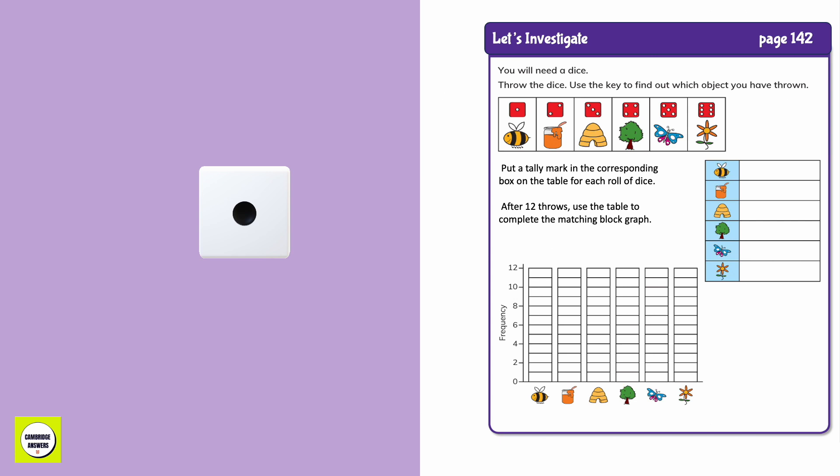Put a tally mark in the matching box in the table every time you throw the dice. When you have thrown the dice 12 times, use the table to complete the matching block graph.